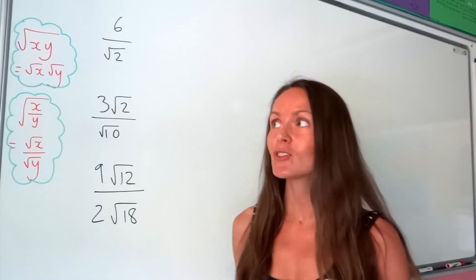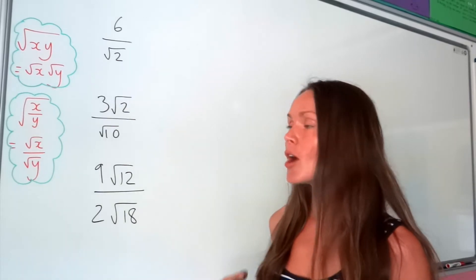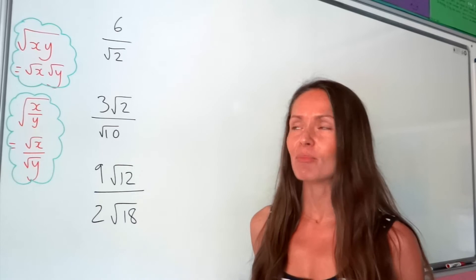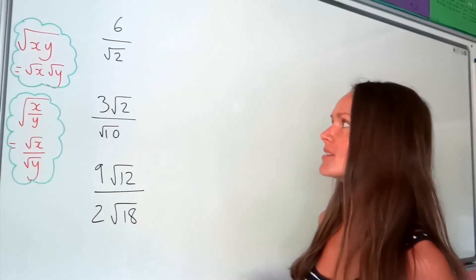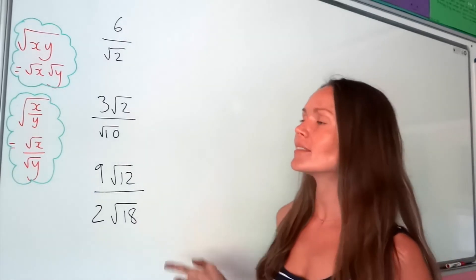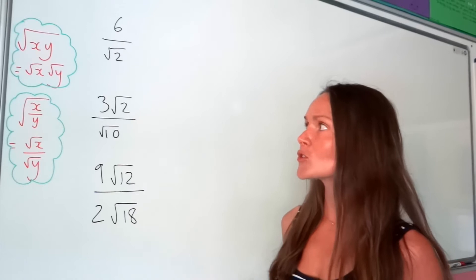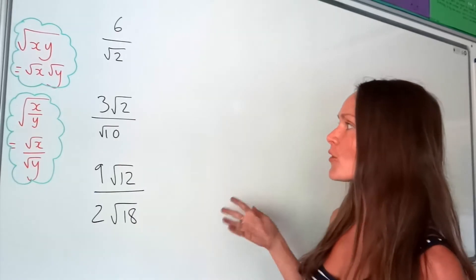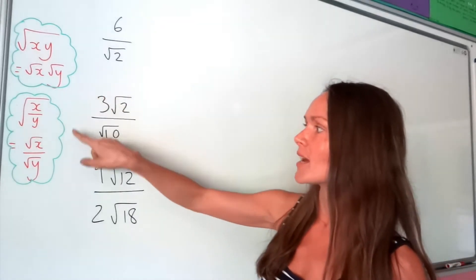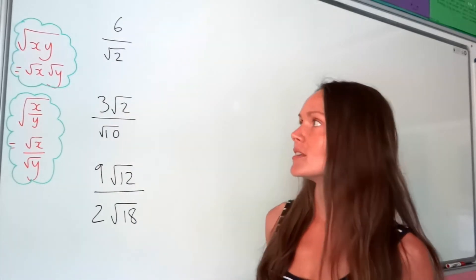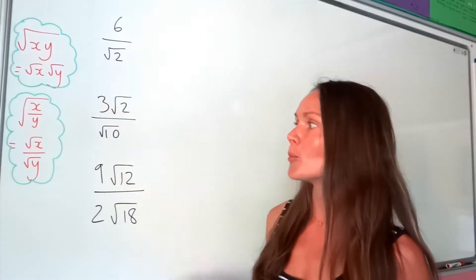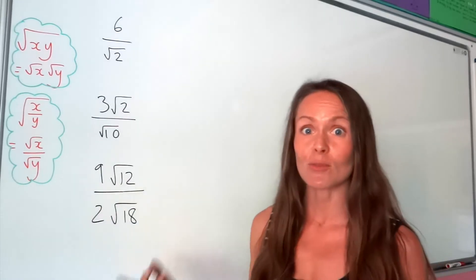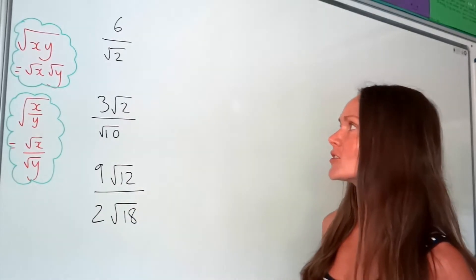In this video I'm going to show you how to rationalise the denominator. That sounds a bit scary, but all it means is we need to rewrite a fraction so that there's no square root in the denominator. Just before I start, I want to point out these two main properties of surds, which I'll refer to from time to time when doing the calculations.